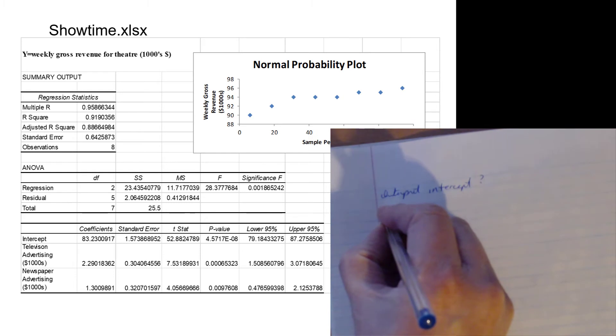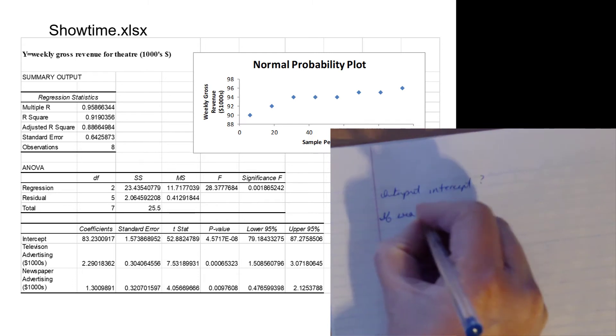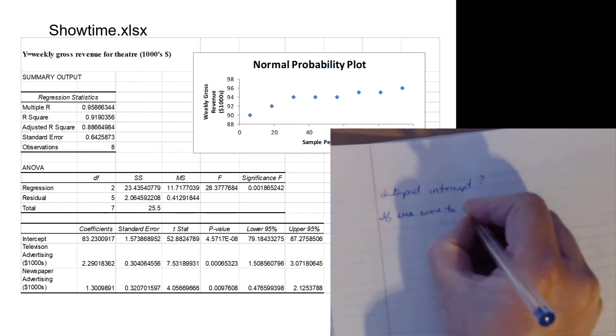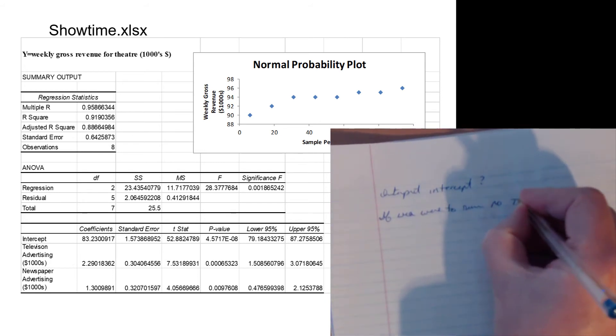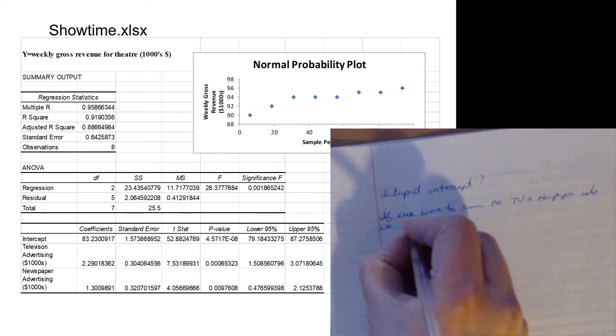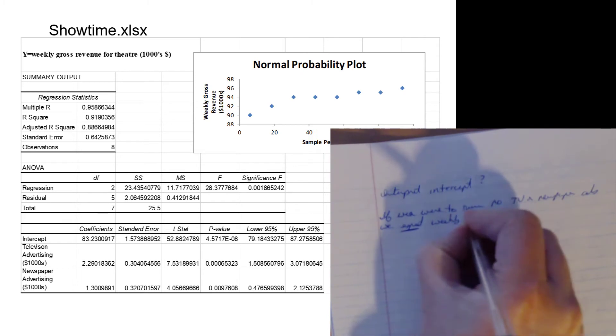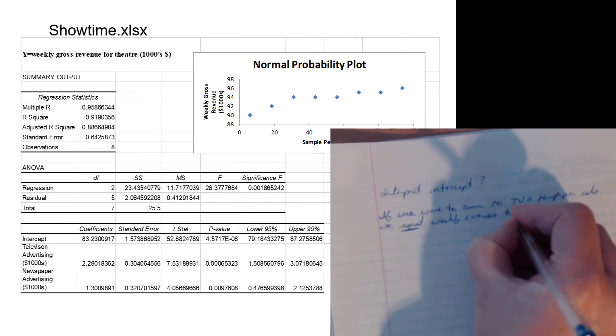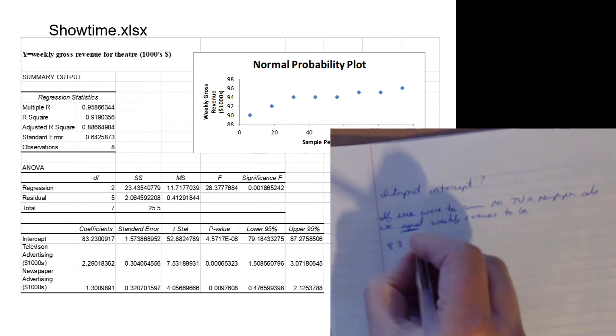In this case, the intercept does have practical meaning. So if we were to run no TV or newspaper ads, we expect weekly revenue to be eighty-three thousand two hundred and thirty dollars. That's it - it has practical meaning. Don't run any advertising, movie revenues will be eighty-three thousand dollars.